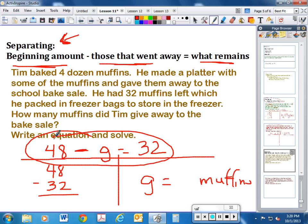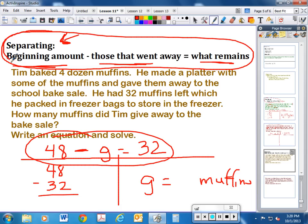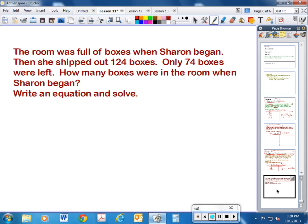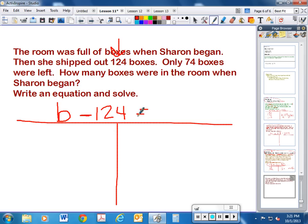All right. Let's take a look at this one then. Make sure, by the way, that you get this in your notes—the separating pattern. All right. The room was full of boxes when Sharon began, and then she shipped out 124 boxes. Only 74 boxes were left. How many boxes were in the room when she began? Well again, we don't know how many were at the beginning amount, so that's your letter. We know how many boxes left, how many were separated out—well that would be 124. And we know that there were 74 left at the end. All right, I would like you to solve this on the left-hand side and then write your answer on the right-hand side. And when you get to your answer, ask yourself that question: Does my answer make sense? Does this make sense that that's how many boxes Sharon had at the very beginning of the story?